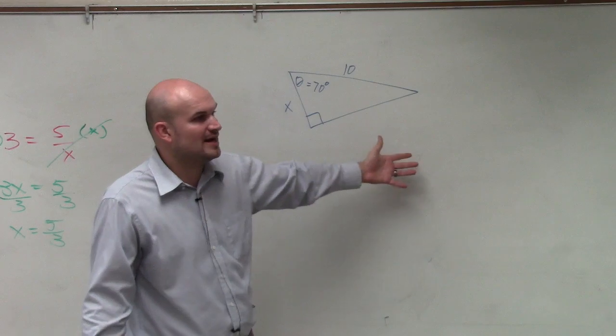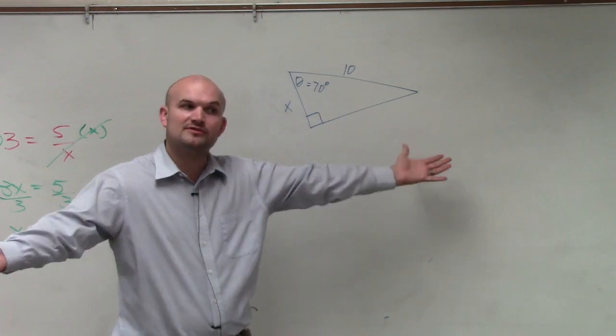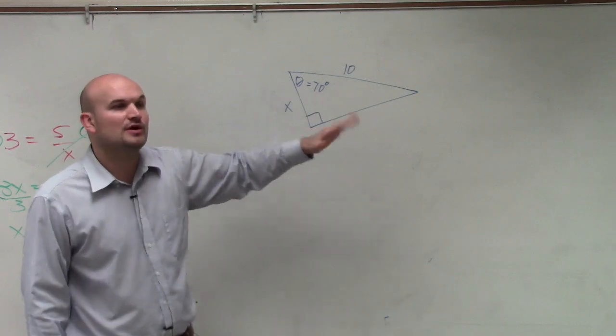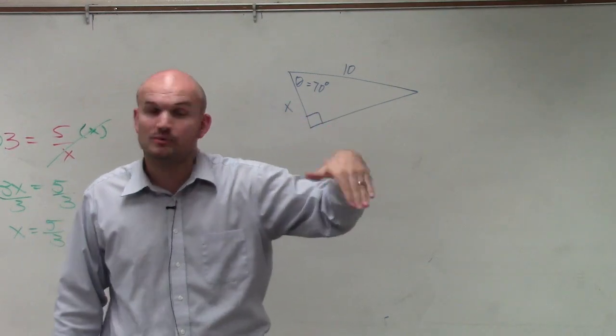With the Pythagorean theorem, we could just use it as long as we had our two side lengths to find the third side length. But here, we're only given one side length and an angle. So the first thing we want to do is identify which trigonometric function we can apply.